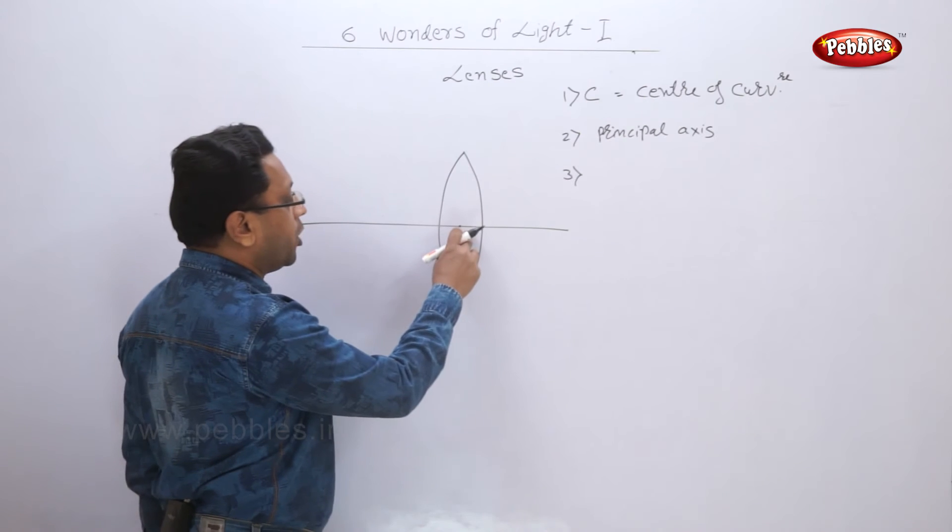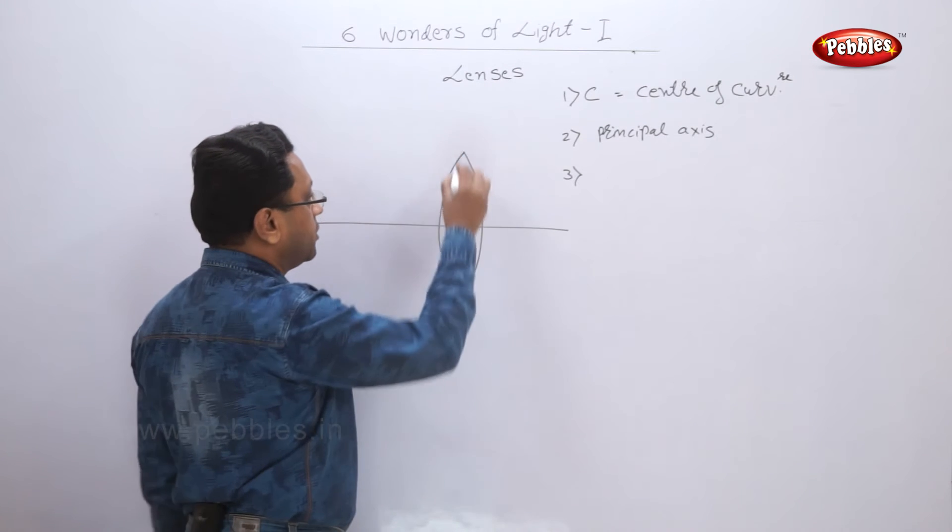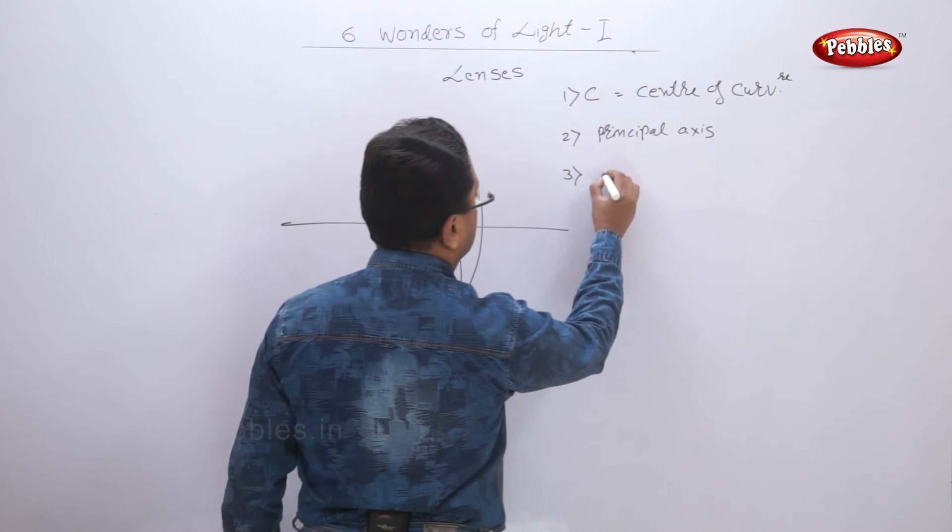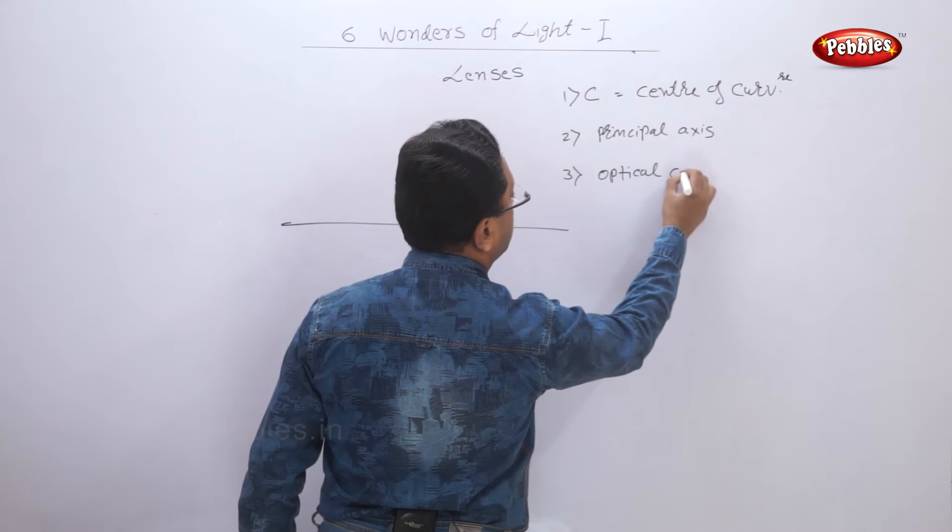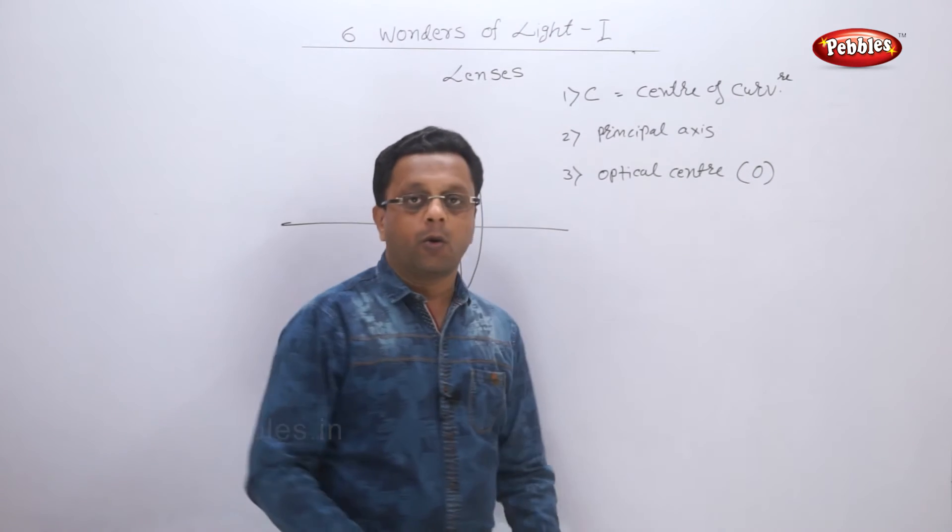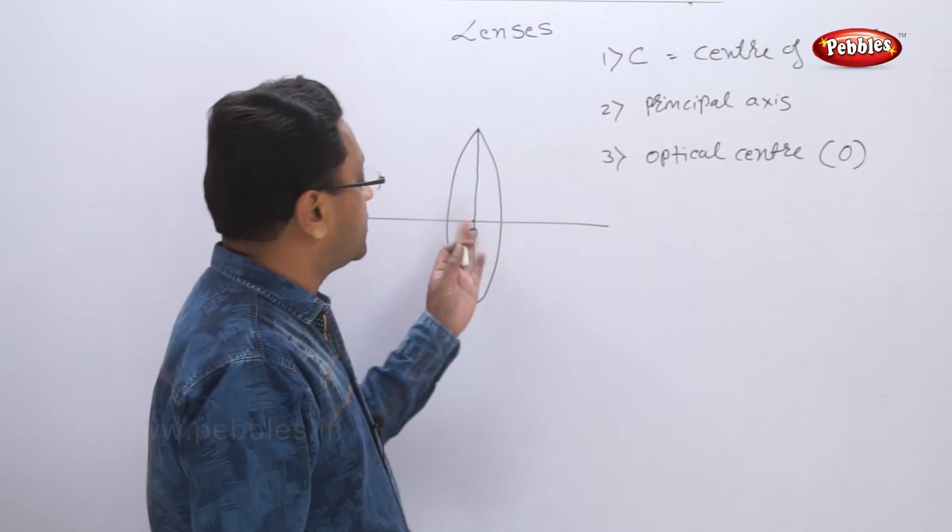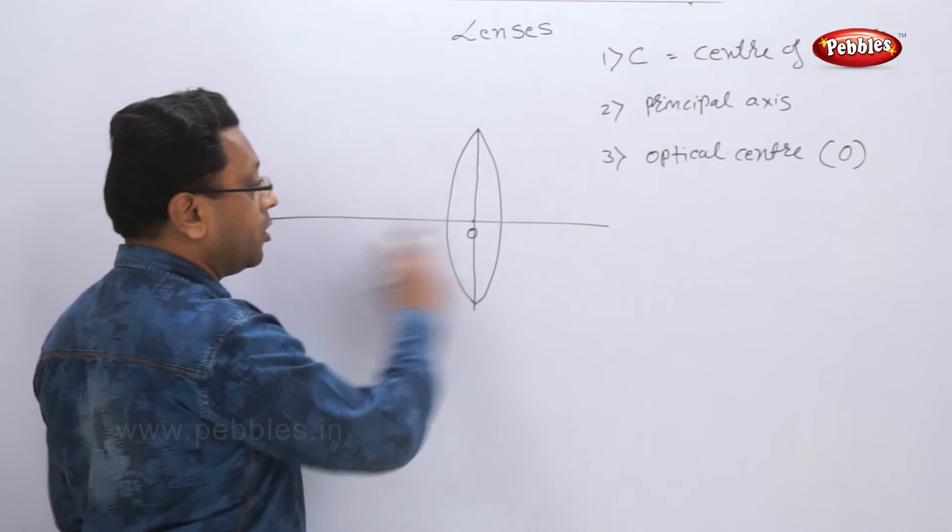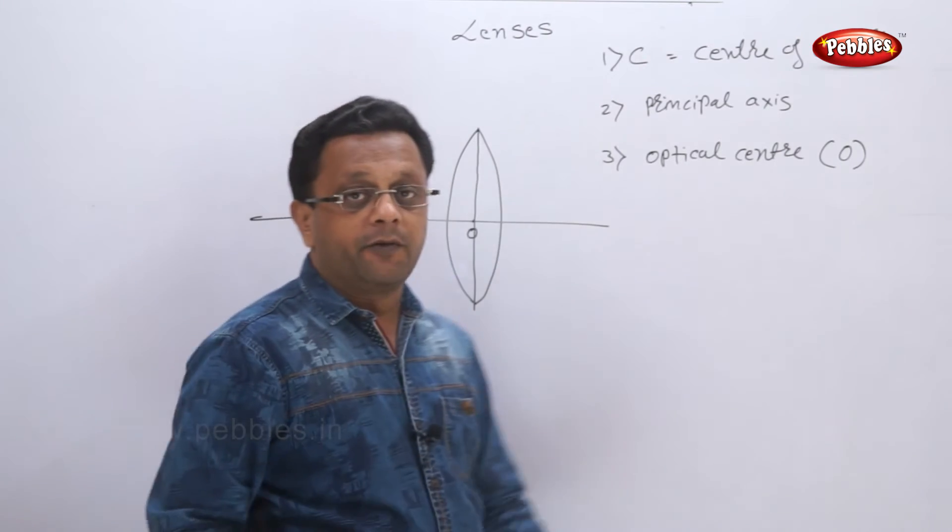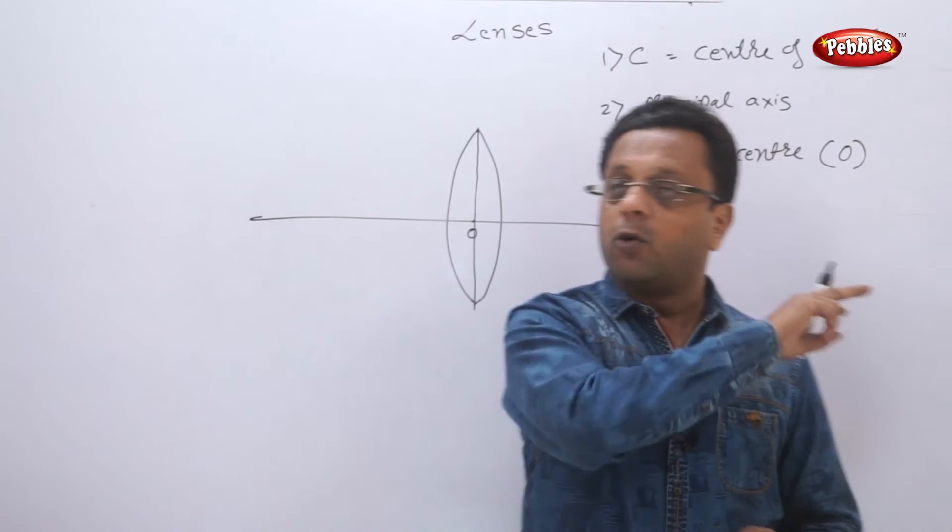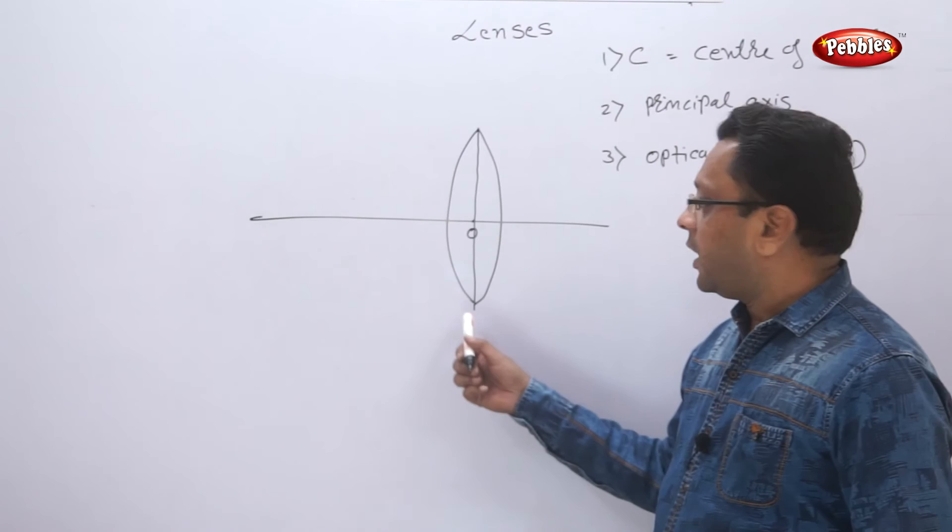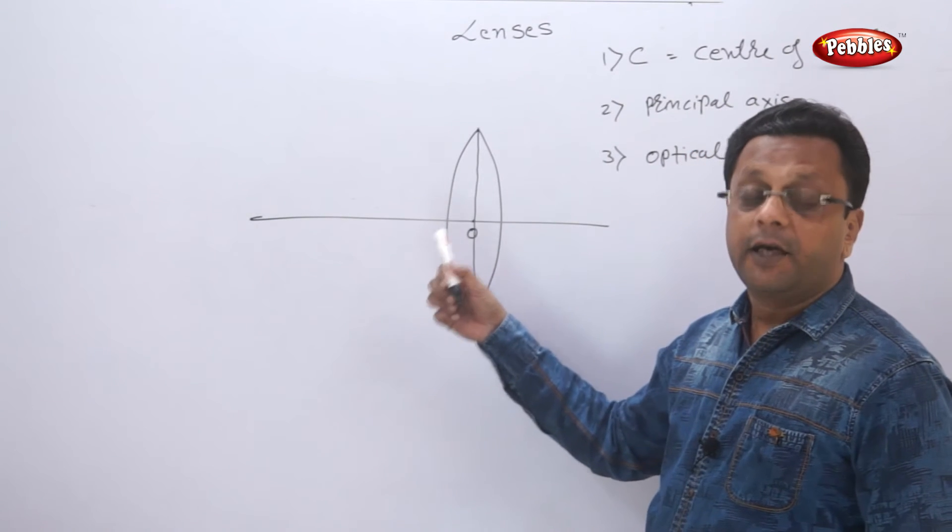Now at this point, the principal axis and center of the lens meet. This is called as optical center, denoted by letter O. The peculiar point of this optical center is whenever any incident ray falls on the lens at the optical center and passes through the lens, it will not converge or diverge, it will go in a straight line.